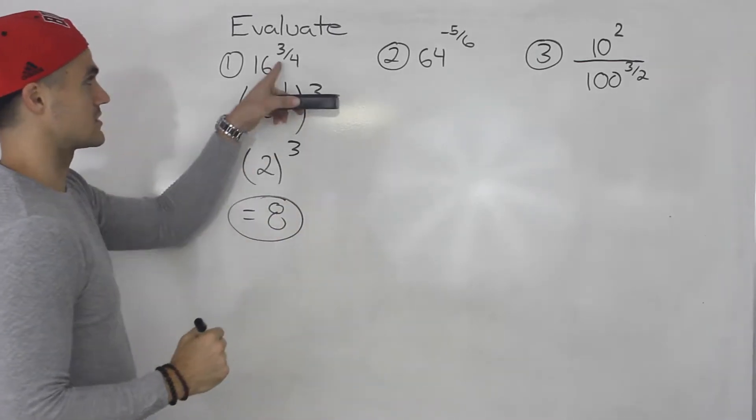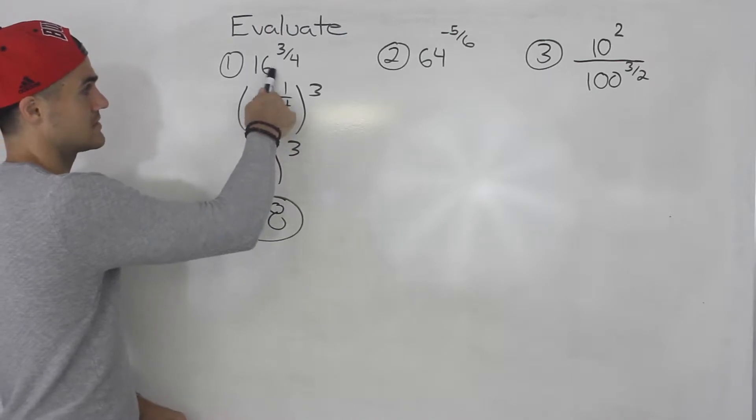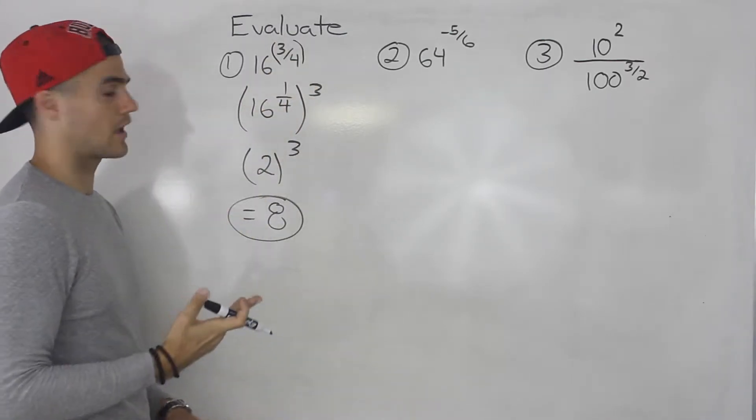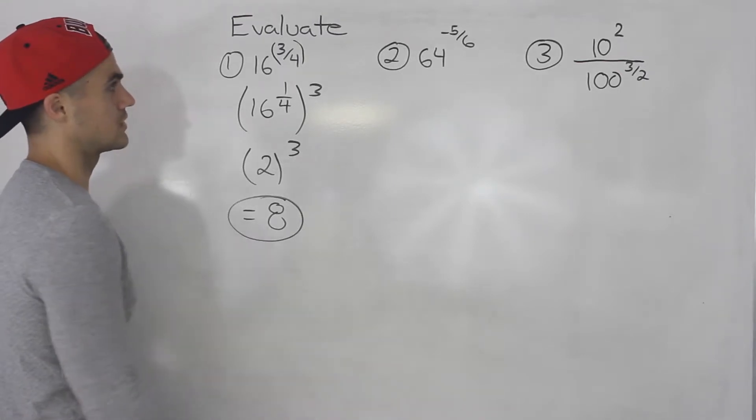So that's the answer to this, and you could check your answer. You can plug this in—16 to the power of 3 over 4. Remember you put that exponent in brackets when you plug it into your calculator, and you should get that value.